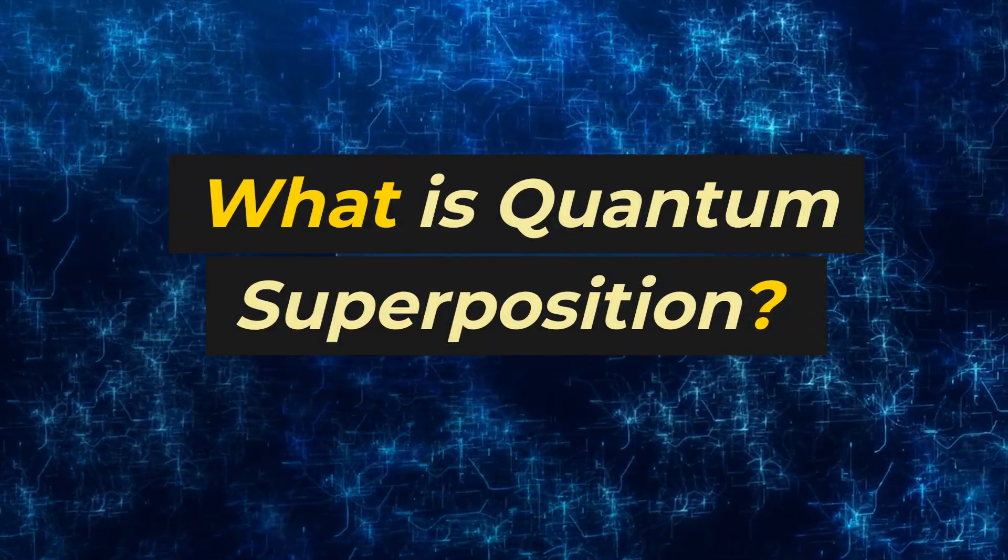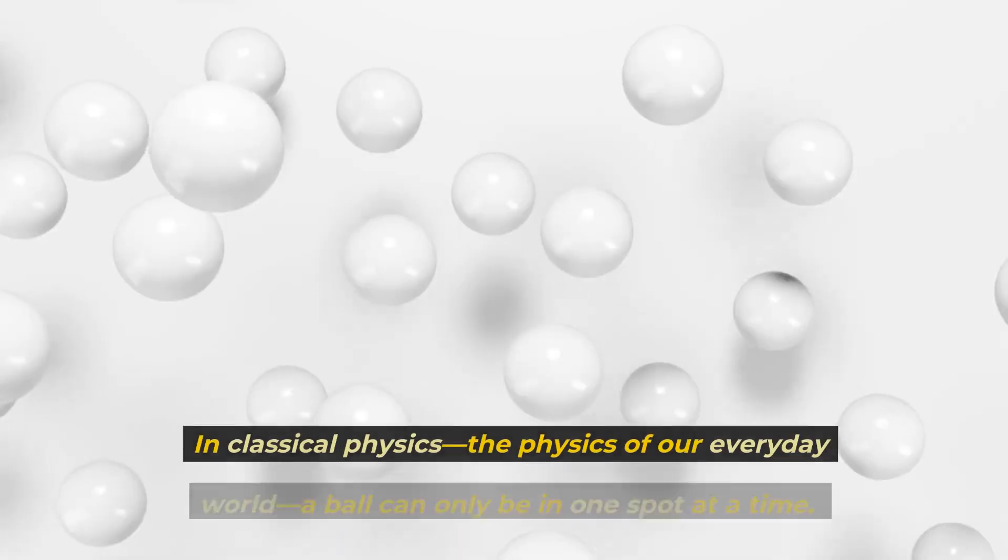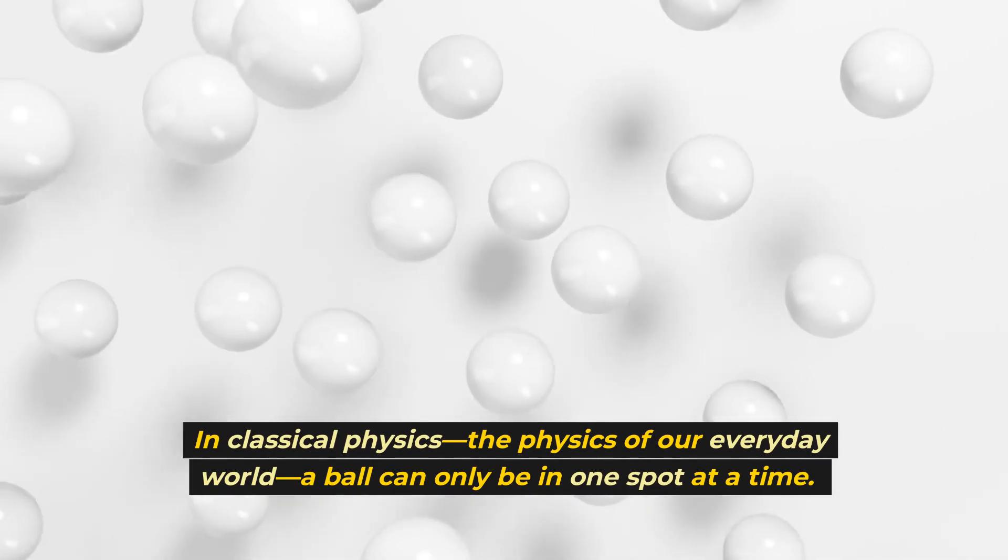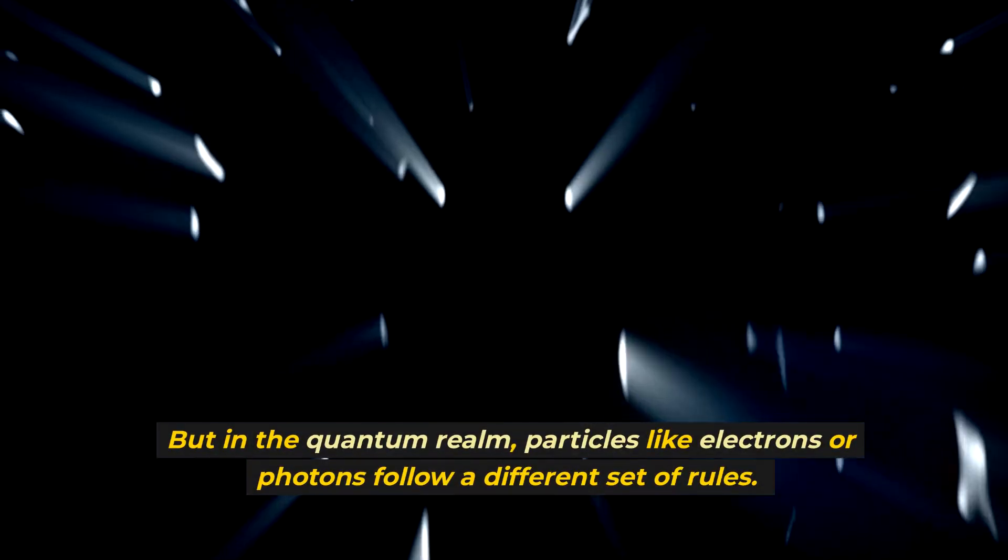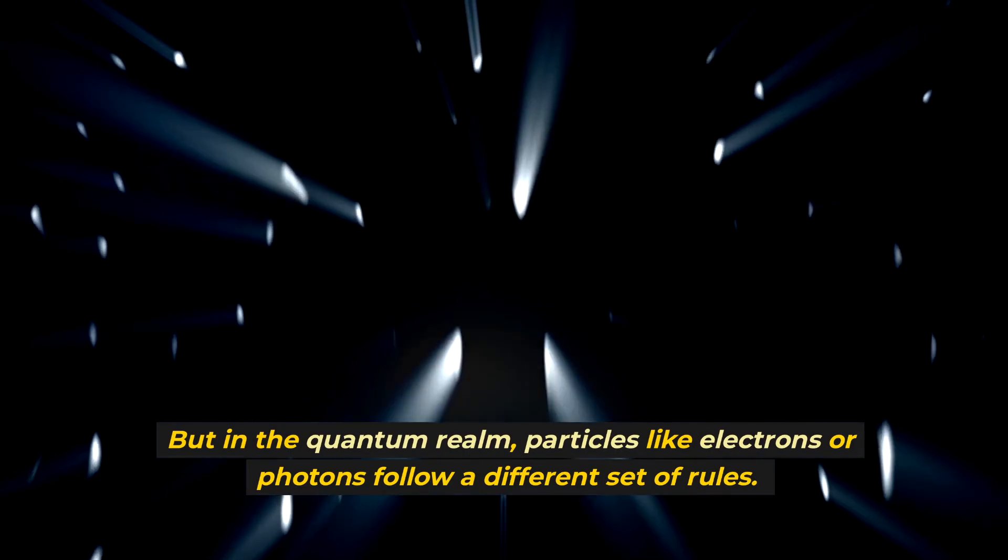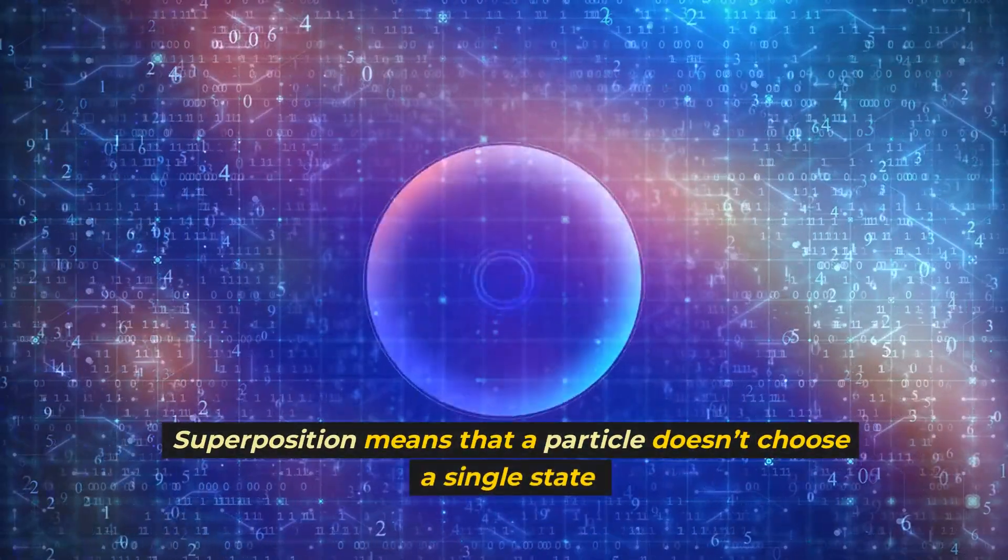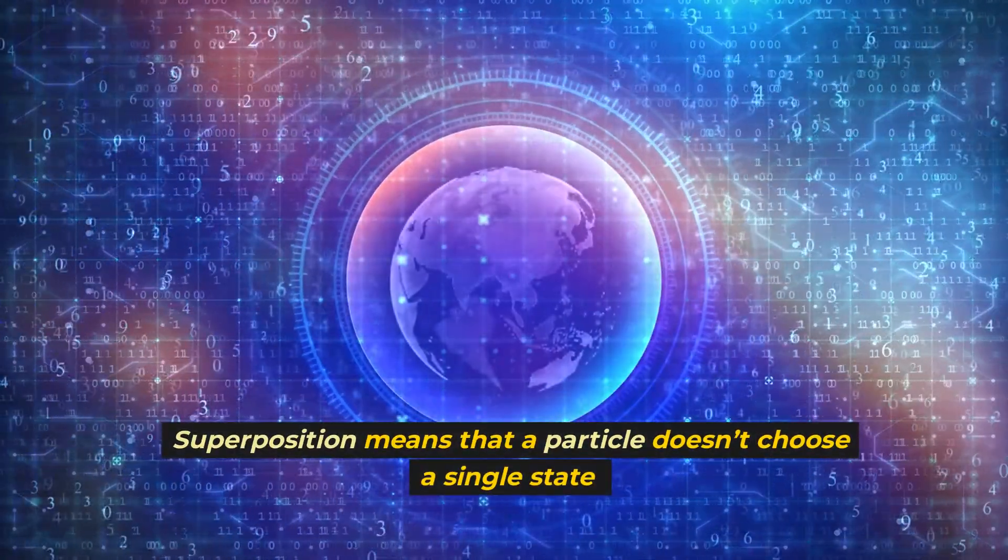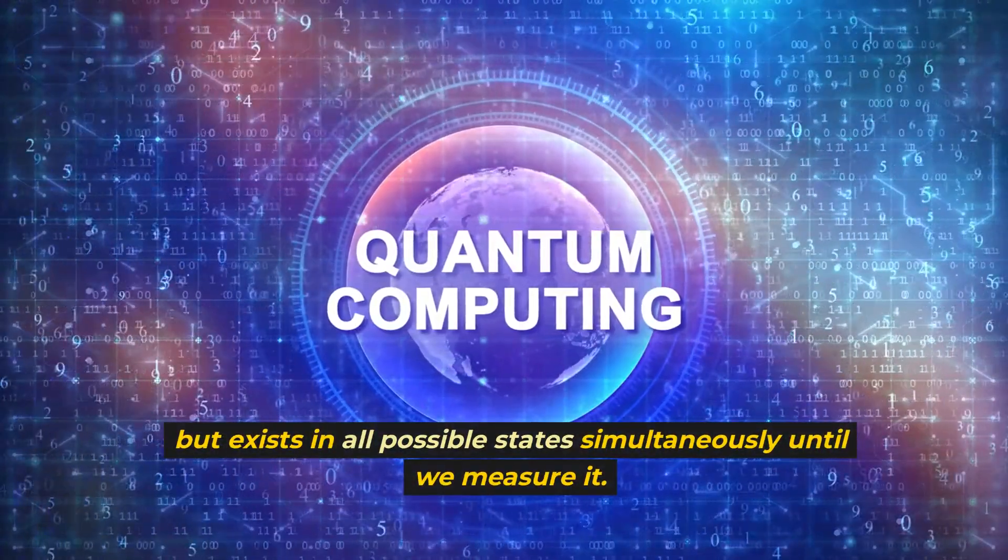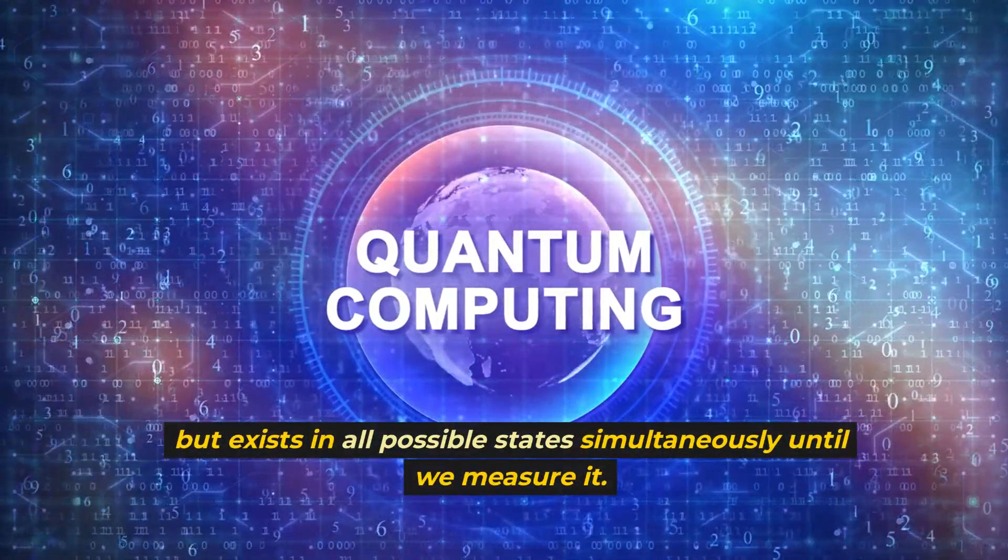What is quantum superposition? In classical physics, the physics of our everyday world, a ball can only be in one spot at a time. But in the quantum realm, particles like electrons or photons follow a different set of rules. Superposition means that a particle doesn't choose a single state, but exists in all possible states simultaneously until we measure it.